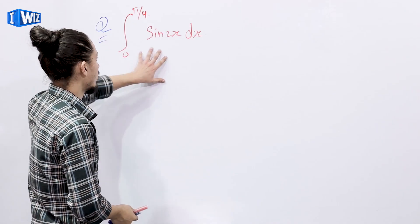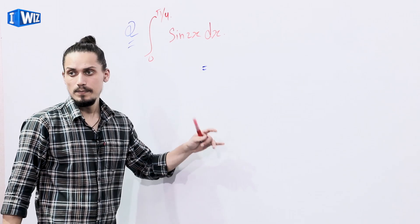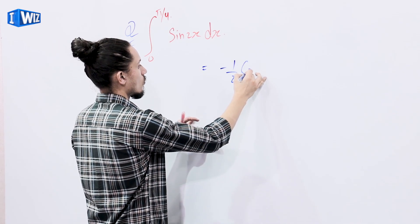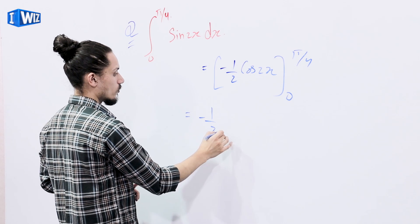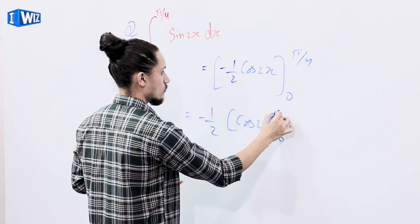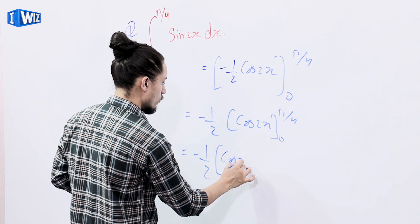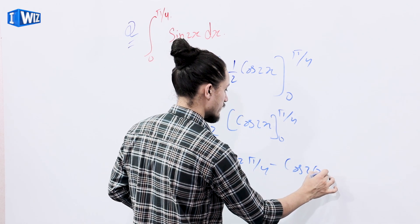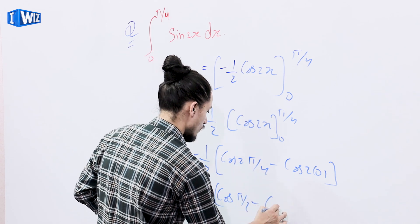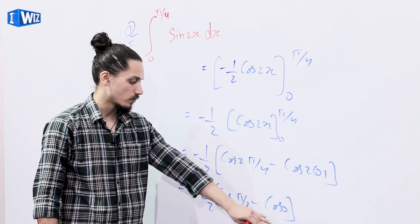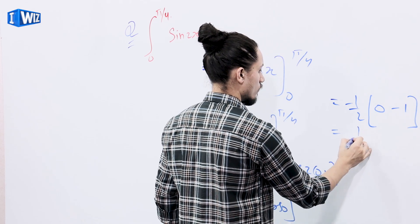Next example: integrate sin(2x) from the limit 0 to π/4. The integration of sin(2x) equals minus 1/2 cos(2x), evaluated from 0 to π/4. That equals minus 1/2 times [cos(2 times π/4) minus cos(2 times 0)], which is minus 1/2 times [cos(π/2) minus cos(0)]. Now cos(π/2) equals 0 and cos(0) equals 1, so we have minus 1/2 times (0 minus 1), which equals 1/2.